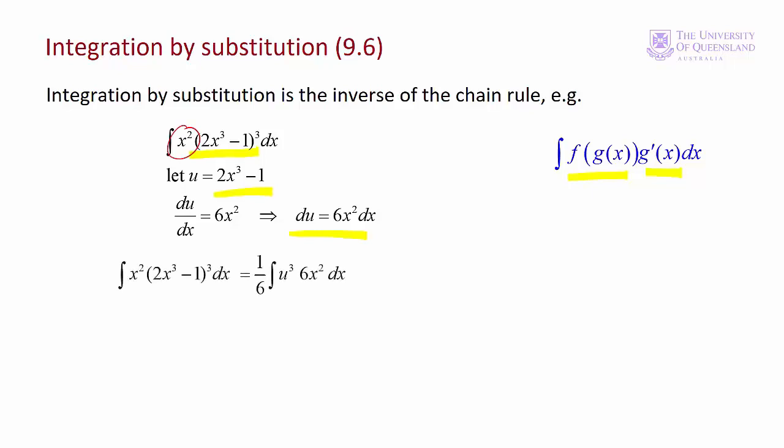We replace 2x cubed minus 1 with u. Now we have 6x squared dx. To get 6x squared dx, we multiply x squared by 6, and then multiply the whole integral by 1/6. Since 6 times 1/6 equals 1, it's an equivalent function. Now we can substitute in du, and we have a much simpler function to integrate: 1/6 times the integral of u cubed. That gives us 1/6 times u to the 4th over 4 plus c. The final step is to substitute back the original function g(x) for u, and then we have our answer.